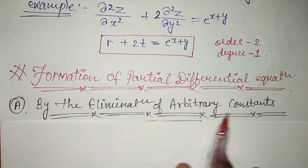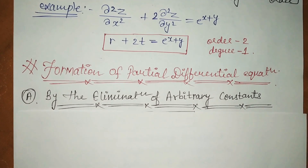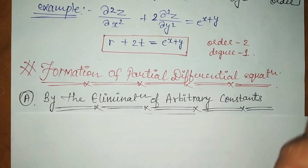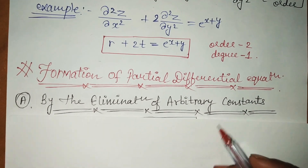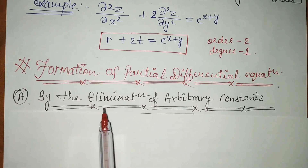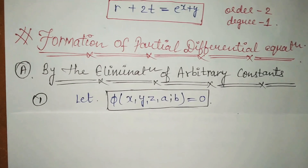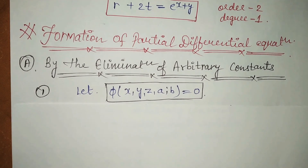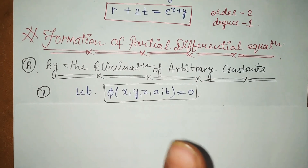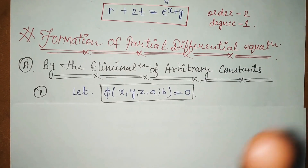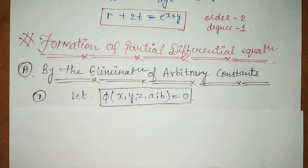The first type is by the elimination of the arbitrary constant. Our first formation involves eliminating the arbitrary constant. Eliminate means: removing one value from its place and putting another value in its place — that's called elimination. So we have to remove the arbitrary constant. The standard form for arbitrary constant questions has variables x, y, z, a, b — where a, b are the arbitrary constants, x, y are independent variables, and z is the dependent variable.